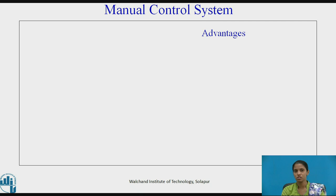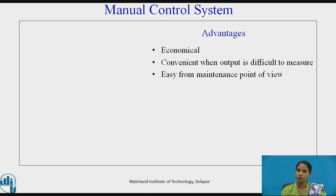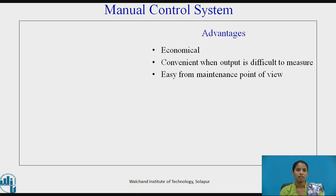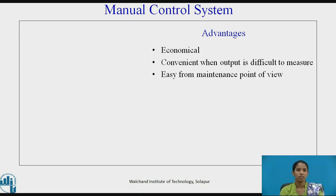Let us see the advantages of manual control systems. Manual control systems are economical — there is no requirement of feedback systems or any other process plants. They are convenient when output is difficult to measure, and they are easy from a maintenance point of view. There is no maintenance required; just the requirement of an operator.